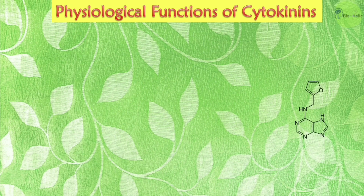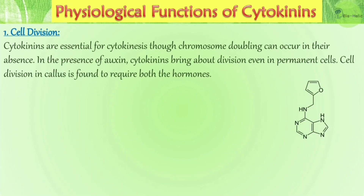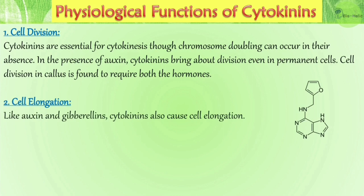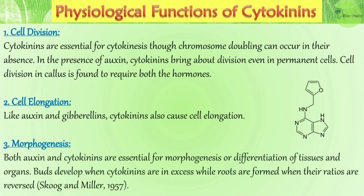Now the most important part for exam purposes: the physiological functions of cytokinins. First, cytokinins are essential for cytokinesis — though chromosome doubling can occur in their absence. In the presence of auxin, cytokinins bring about division even in permanent cells; cell division in callus requires both auxin and cytokinins. Second, cell elongation: like auxin and gibberellin, cytokinins also cause cell elongation. Third, morphogenesis: both auxin and cytokinins are essential for differentiation of tissues and organs. Buds develop when cytokinins are in excess, while roots form when their ratios are reversed.